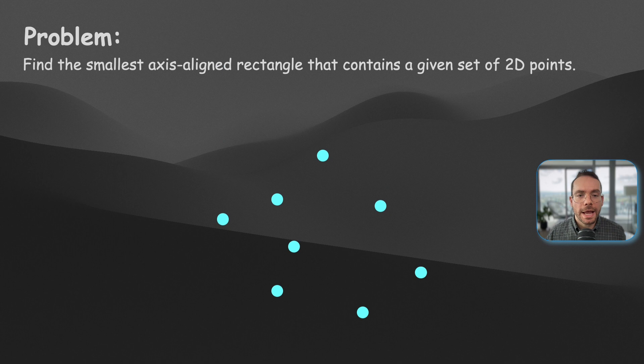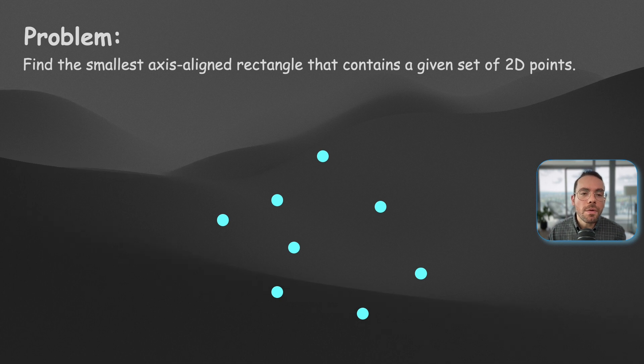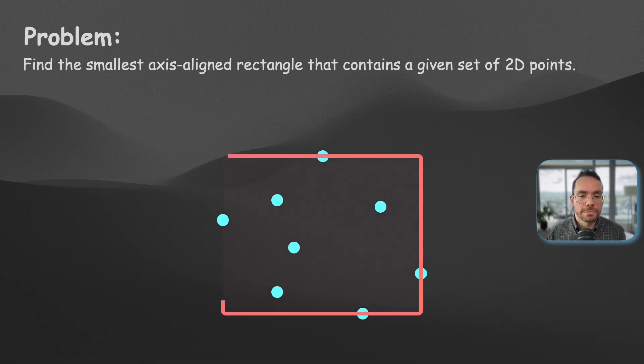Well, take a look at this point scattered across our 2D space. To find the smallest rectangle that encloses all these points, we need to determine four values.